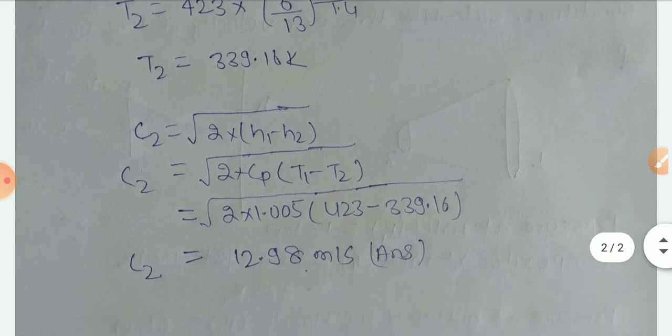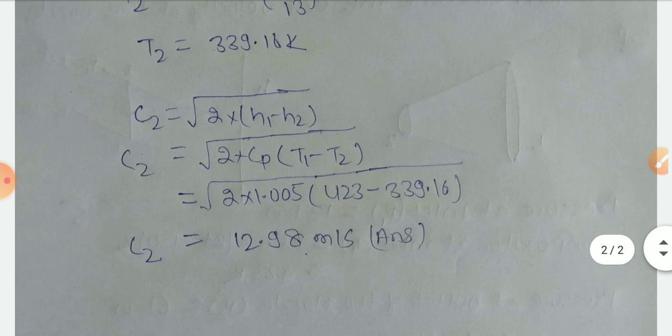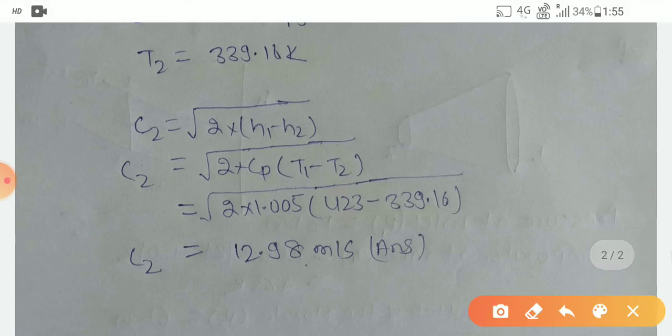Substituting this value in the equation: C2 = √(2 × Cp × (T1 - T2)). Cp is 1.005 kJ/(kg·K), T1 is 423 K, and T2 is 339.16 K. Finally, we get the answer: 12.98 meters per second. Thank you friends for watching this video.